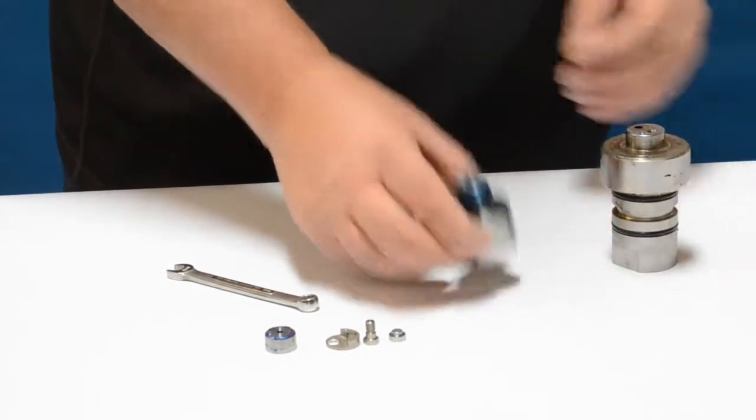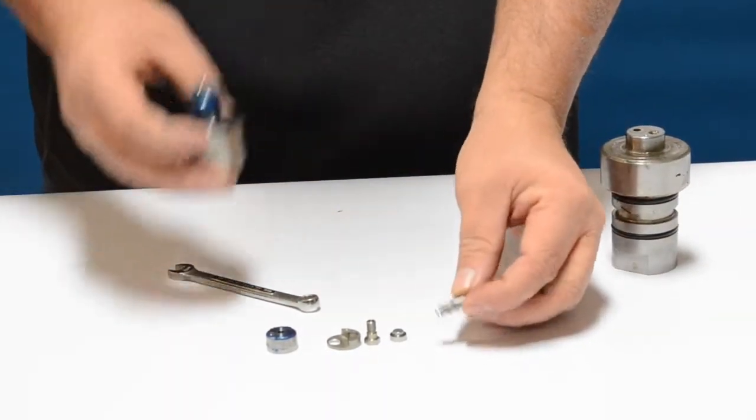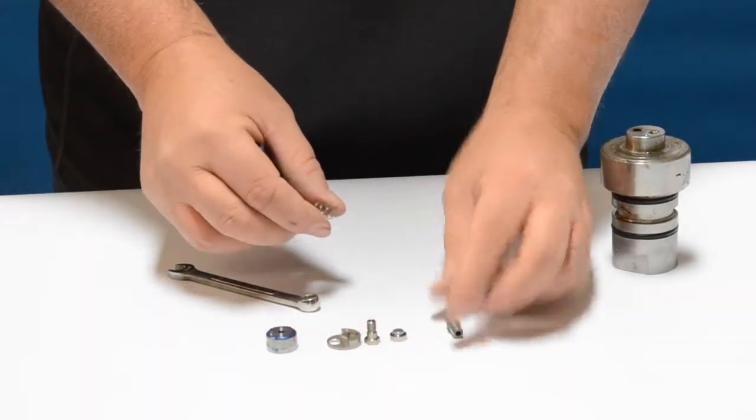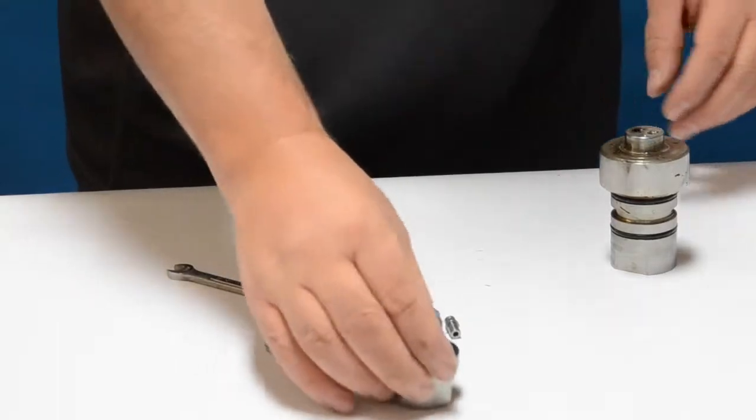You're going to have your high pressure seat in the adapter, your outlet poppet, and this spring. Go ahead and set all these aside for now. Next we're going to take a pick and use that to take off the low pressure o-rings.